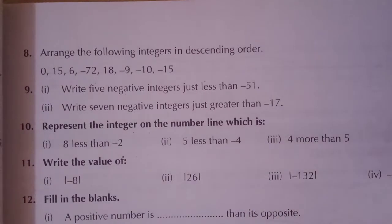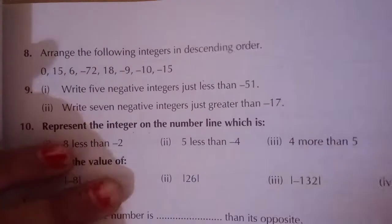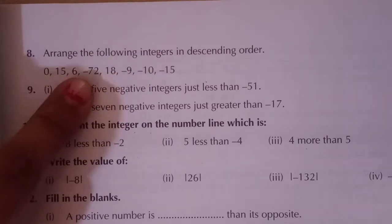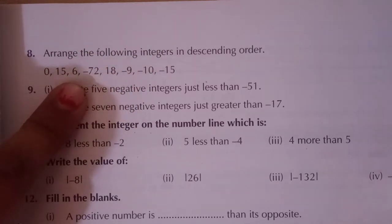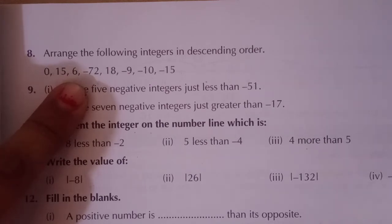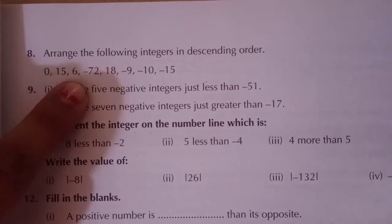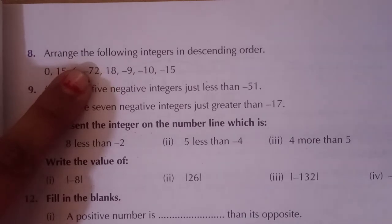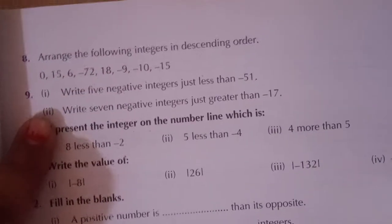Good morning class. We are doing Exercise 4a. Up to question number 7 and 8, we have done ascending and descending order. In ascending and descending order, we learned that positive numbers are always greater than negative numbers. Even 0 is also greater than negative numbers. On the basis of this fact we arranged the numbers. Now let's move to question number 9.